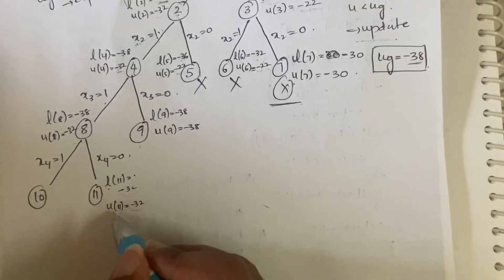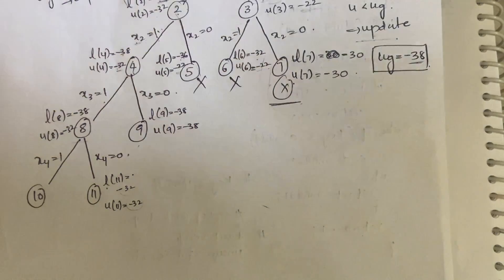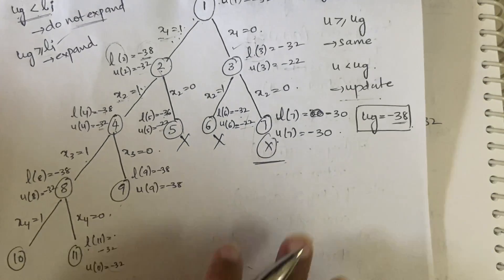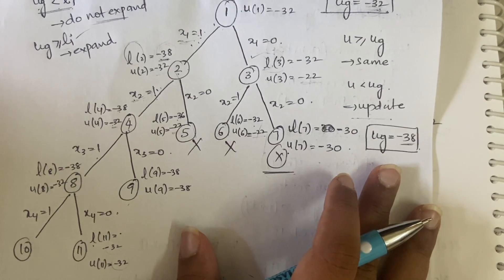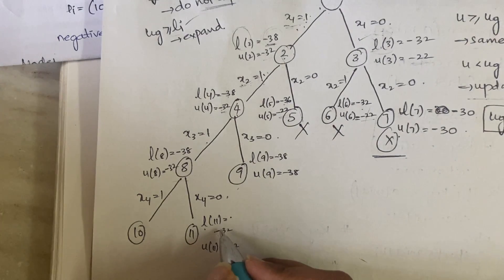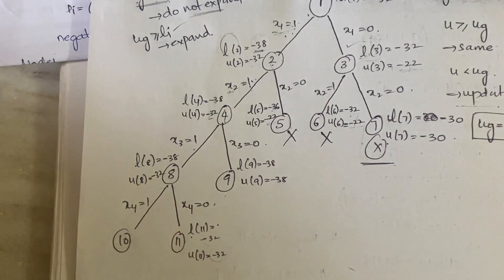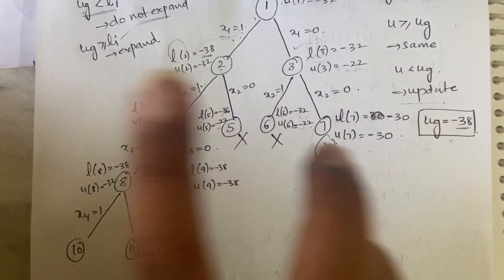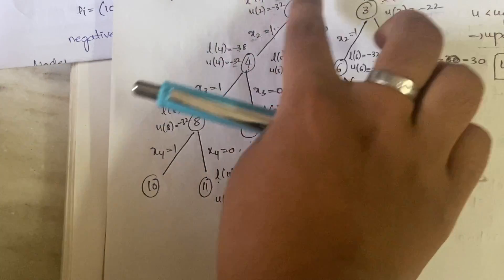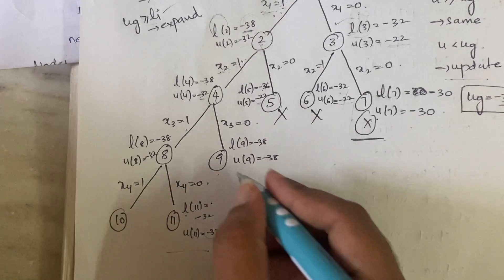Check node 11: upper bound minus 32 is greater than minus 38, so the global upper bound stays at minus 38. Now compare lower bound of node 11 (minus 32) with the global upper bound (minus 38): minus 32 is greater than minus 38, so no update needed. Since all four nodes x1, x2, x3, x4 are already fixed, we need not further expand node 11.